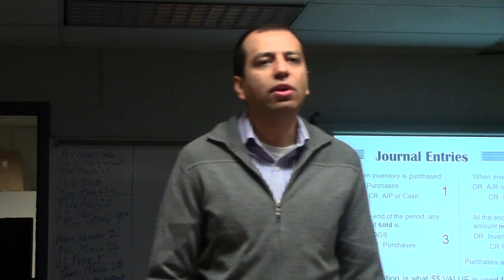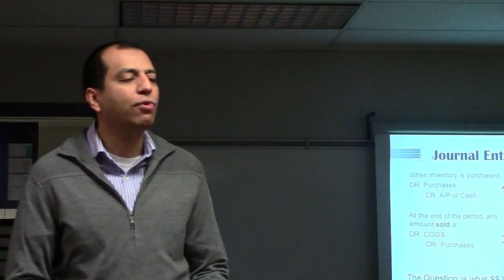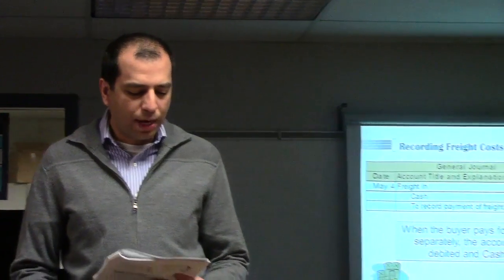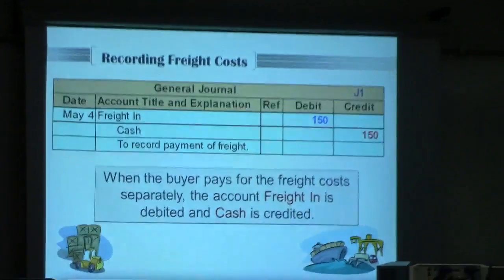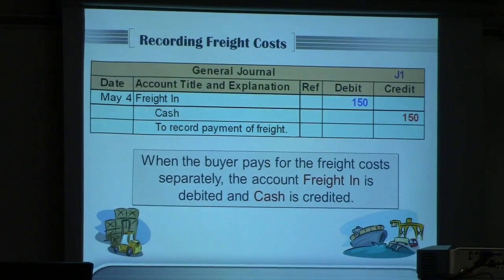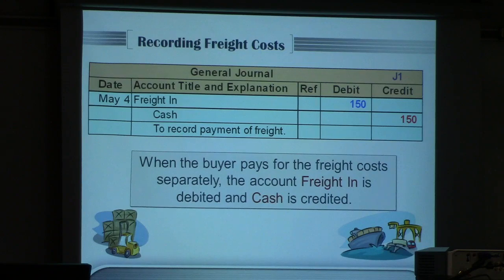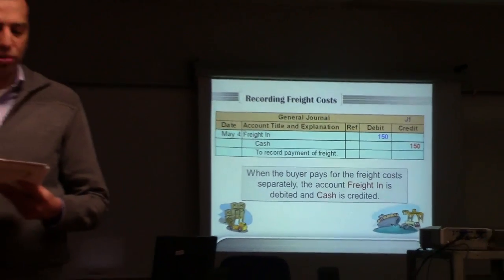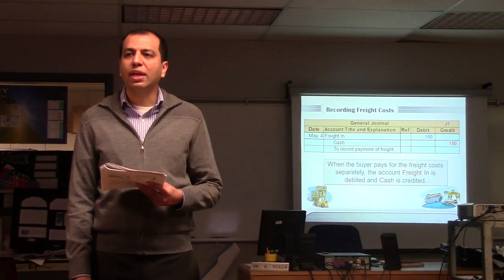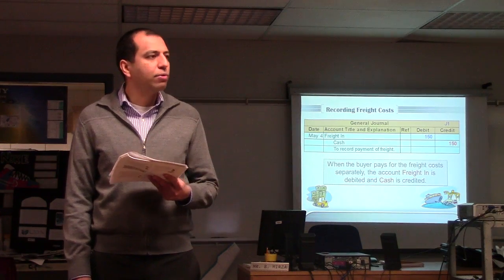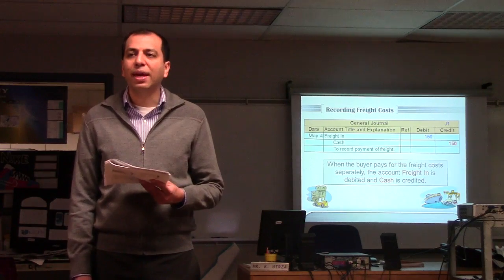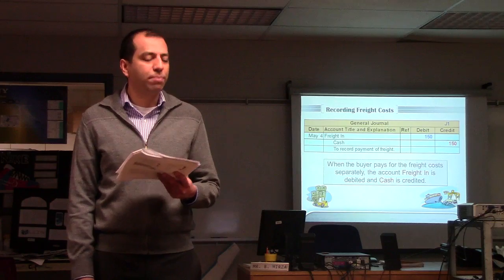We're going to continue our discussion on inventories. To briefly summarize the four transactions we talked about yesterday: when inventory is purchased, you debit Purchases and credit Cash or AP. As you sell inventory, you credit Sales and debit Cash or AR. At the end of the period, you move amounts from Purchases into Cost of Goods Sold — debit COGS, credit Purchases — and move remaining unsold inventory by debiting Inventory and crediting Purchases.